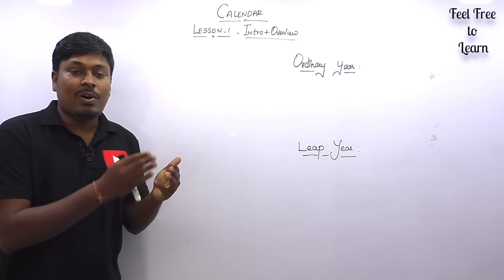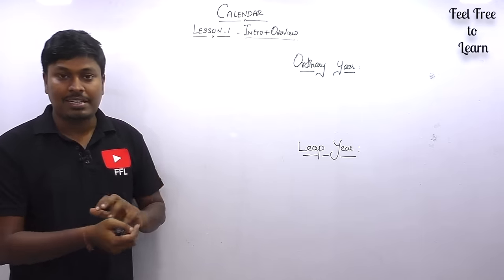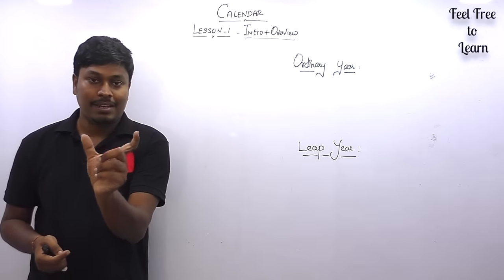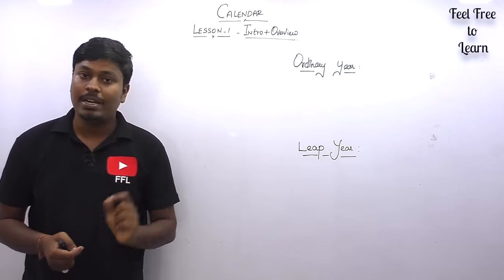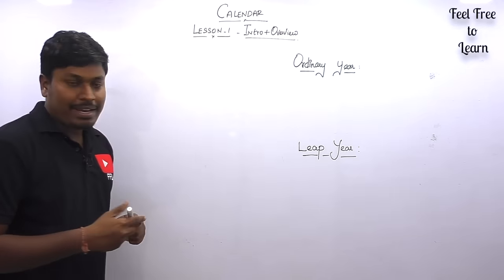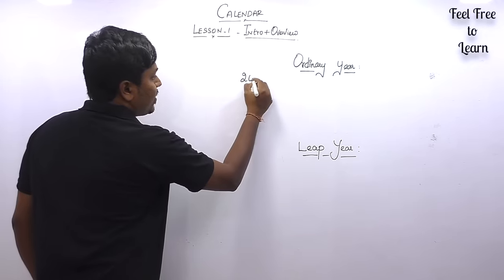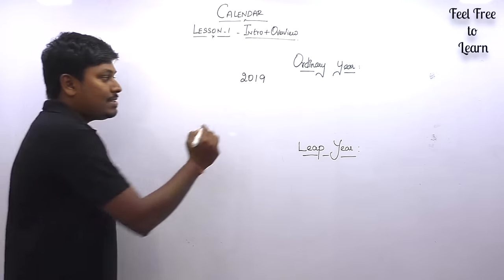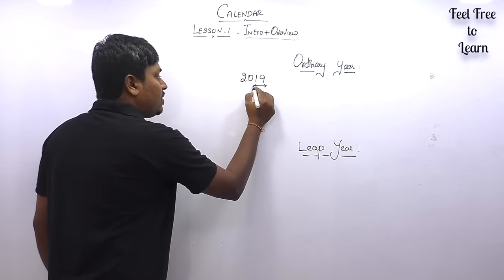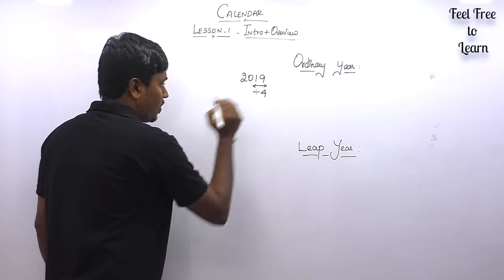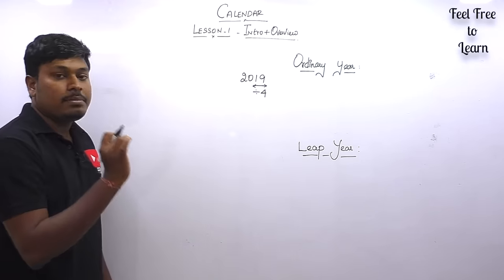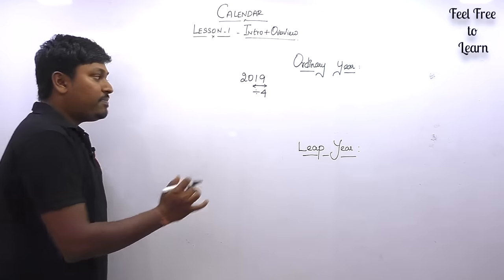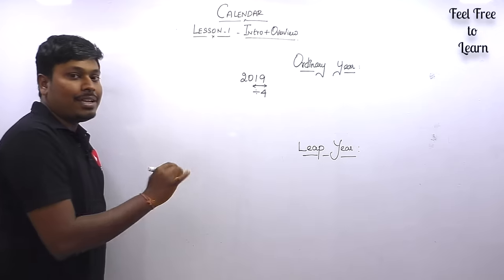In the introduction, we will first see what is called an ordinary year and what is called a leap year. If you see a year, you need to decide whether it is an ordinary year or a leap year. The easiest way: check the last two digits — whether they are divisible by 4 or not. If the last two digits are divisible by 4, it is called a leap year. If not divisible by 4, it is called an ordinary year.